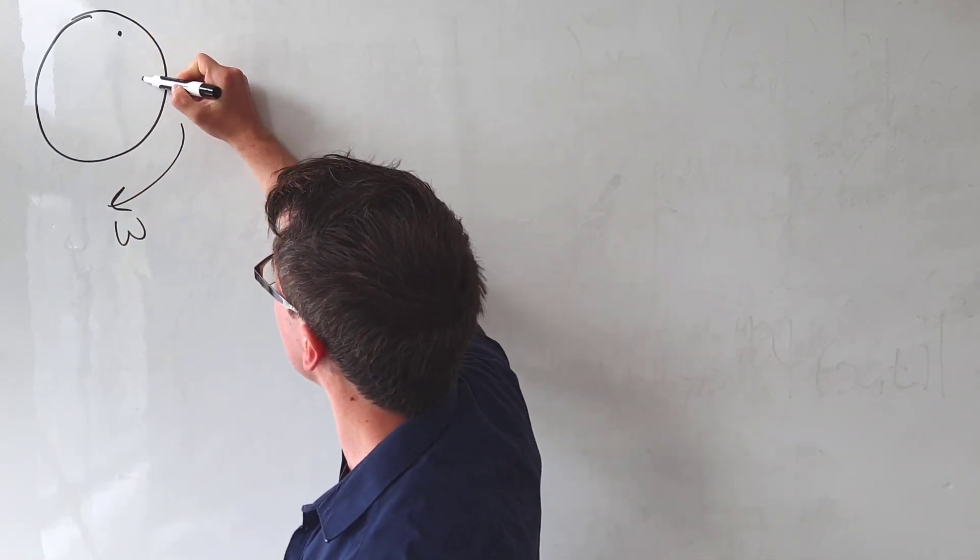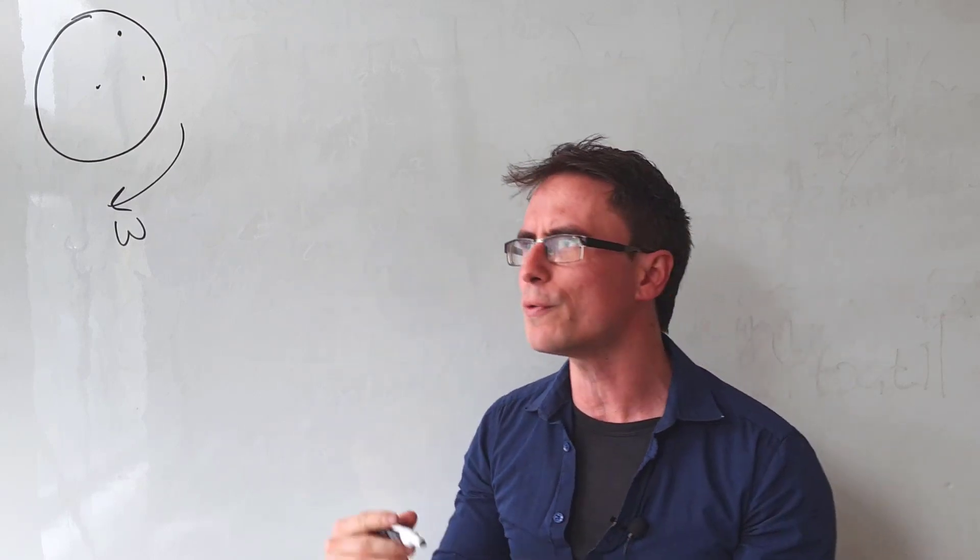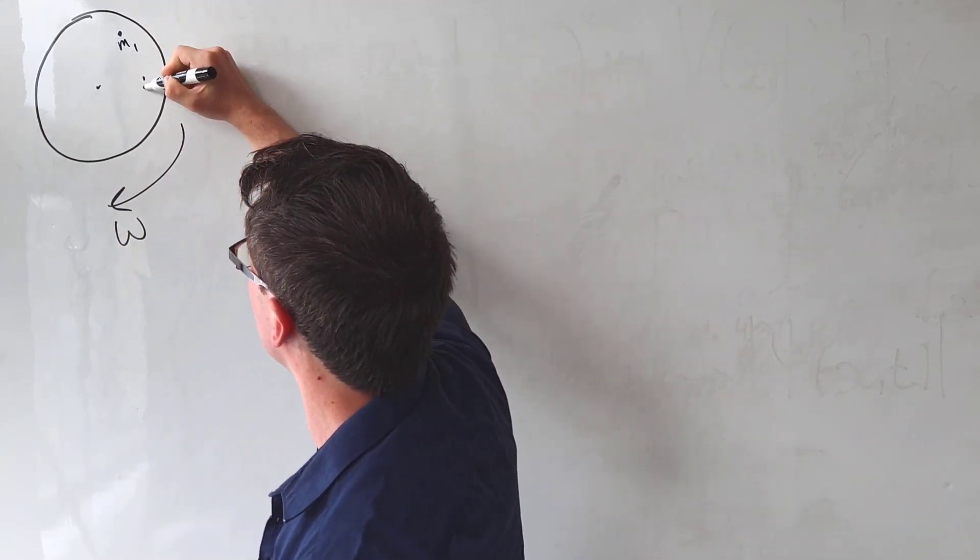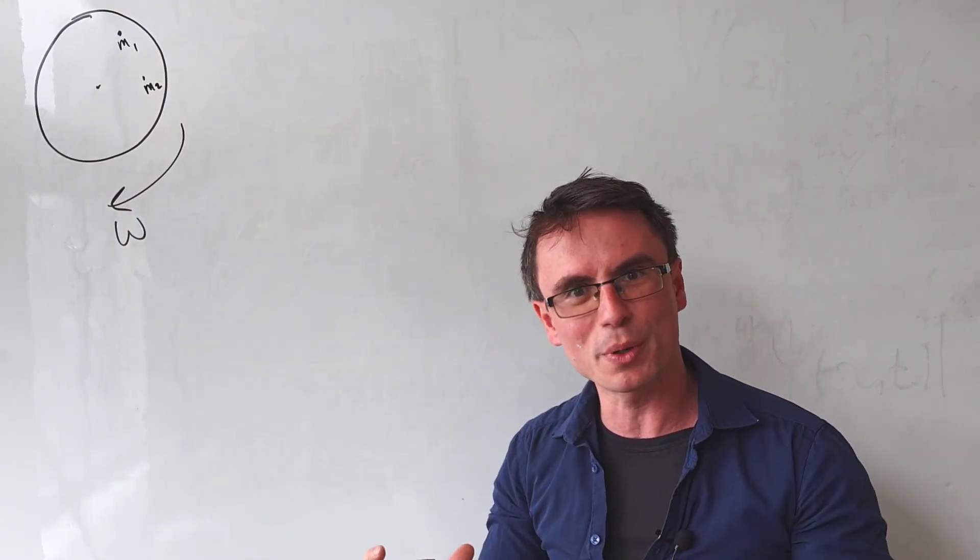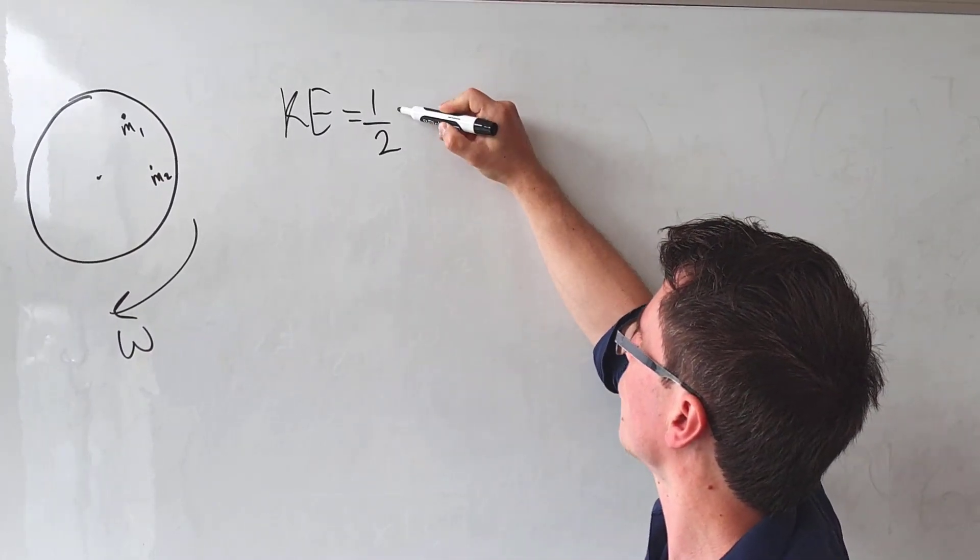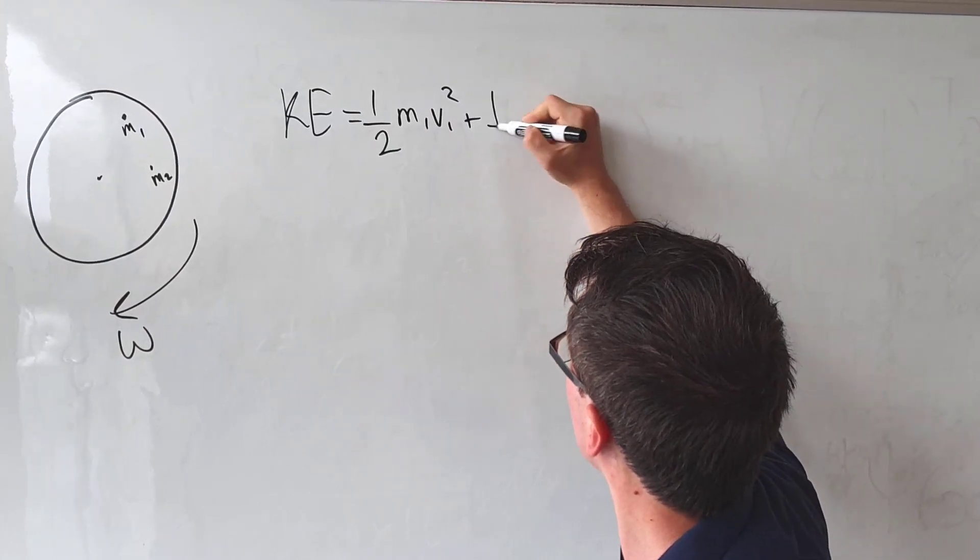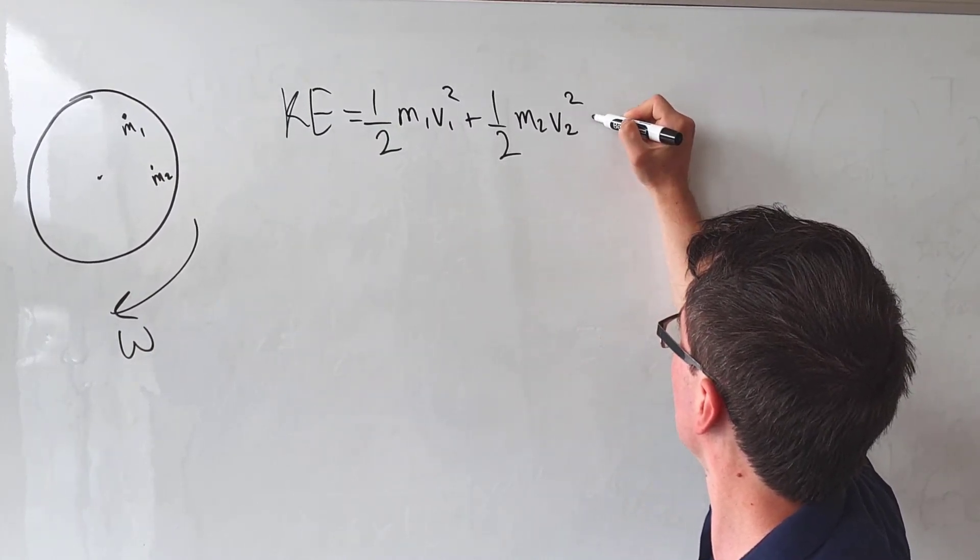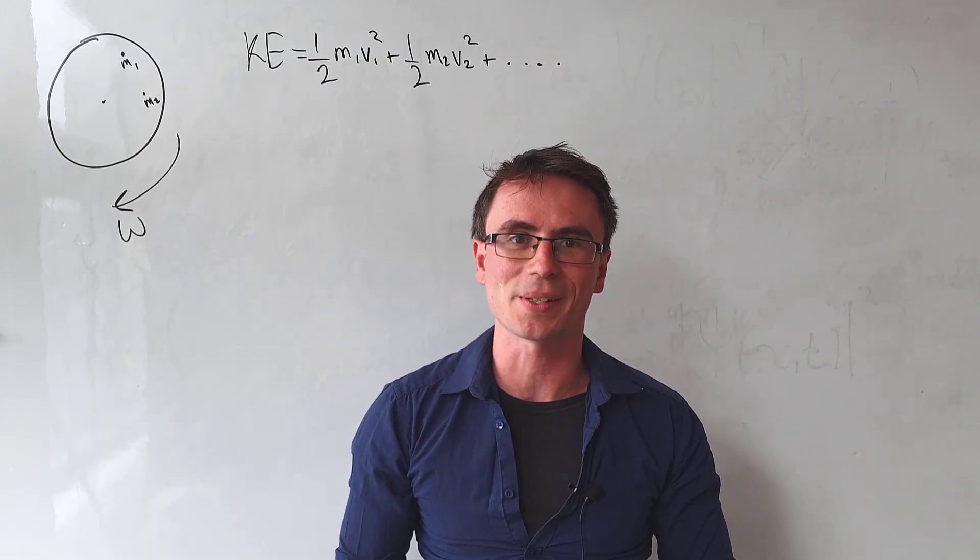This disc is made out of individual particles and they're all moving at different velocities. Let's say that we have one here which is m1, we have another one which is m2, and we have a large number of them. Total kinetic energy will just be equal to a half m1 v1 squared plus a half m2 v2 squared plus dot dot dot, adding up all the individual kinetic energies.